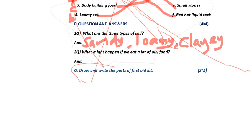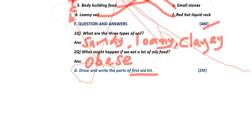Second question: what might happen if we eat a lot of oily food? If you eat a lot of oily food, you will become fat and you will get a disease called obesity. You can write in your own words: if we eat a lot of oily food, we may become fat and get obesity. Each question carries two marks. The last question — G bit — is to draw and write the parts of a first aid kit: scissors, bandage, tablets, and other items. You need to draw and label at least three or four items. These are your answers.